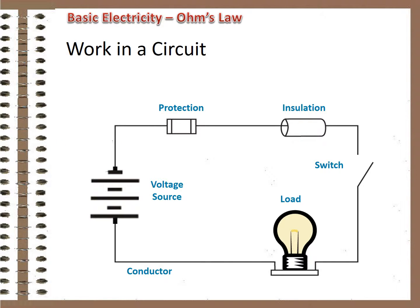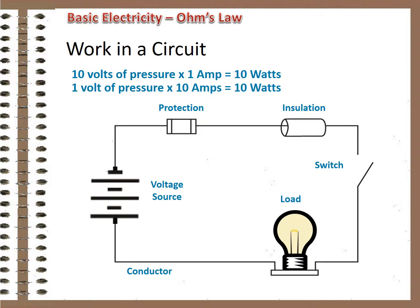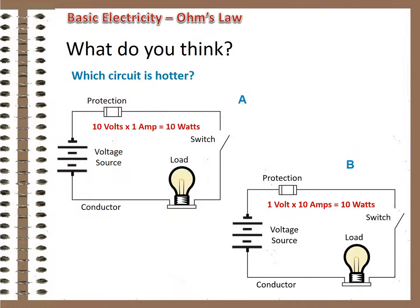A circuit with 10 volts of pressure and 1 amp of current is consuming 10 watts of power. A different circuit with 1 volt of pressure and 10 amps of current is also consuming 10 watts of power — both circuits accomplish the same amount of work. If we wanted to transmit power a long way, low current is good, because that means less energy is lost to heat. This is a critical factor in future discussions of electrical transmission.